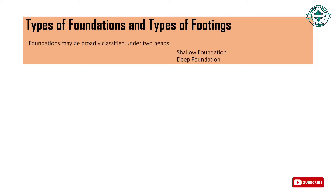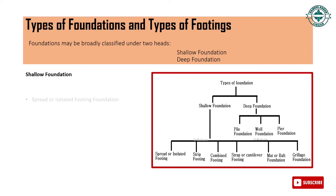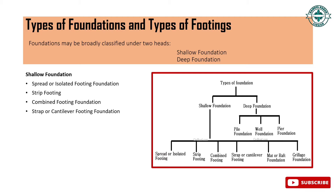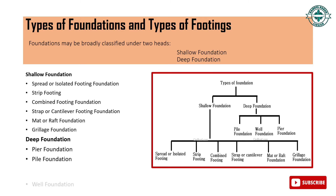Types of foundation and types of footings: foundations may be broadly classified under two heads — shallow foundation and deep foundation. Shallow foundations are classified as: spread or isolated footing foundation, strip footing foundation, combined footing foundation, strap or cantilever footing foundation, mat or raft foundation, and grillage foundation. Deep foundations are classified as: pier foundation, pile foundation, and well foundation. Here we see a flowchart showing the classification of foundation types.